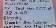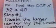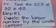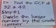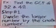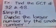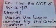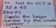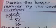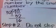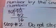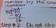So using the Euclidean algorithm, the first step is to divide the larger number by the smaller number. Now, since 32 is smaller than 48, we will use 32 as our divisor and 48 as our dividend.